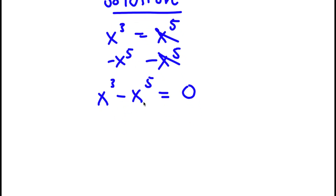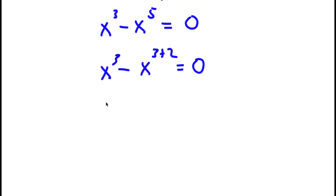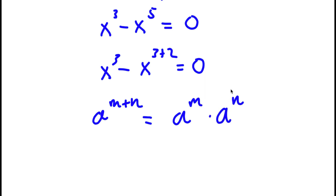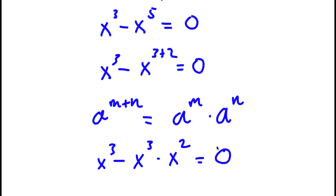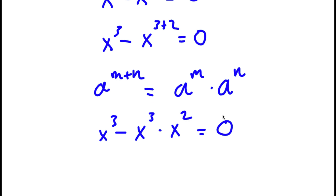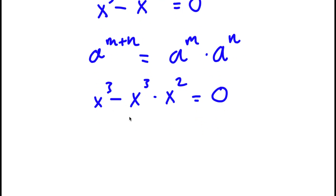Now x⁵ I can rewrite as x^(3+2). Using the rule a^(m+n) = a^m × a^n, x^(3+2) equals x³ times x². So I have x³ − x³ · x² = 0. Notice both terms have x³ in them, so if I factor out x³ I get x³ times (1 − x²) = 0.